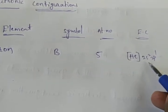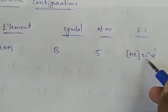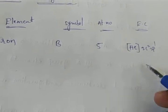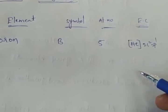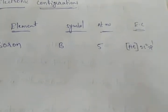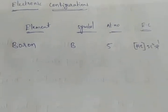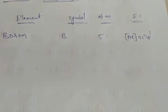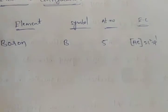The outer electronic configuration is ns² np¹. So for boron it is 2s² 2p¹. As we go down the group, atomic number increases and the number of shells increases — so the configuration becomes 3s² 3p¹, 4s² 4p¹, 5s² 5p¹, 6s² 6p¹, and so on.